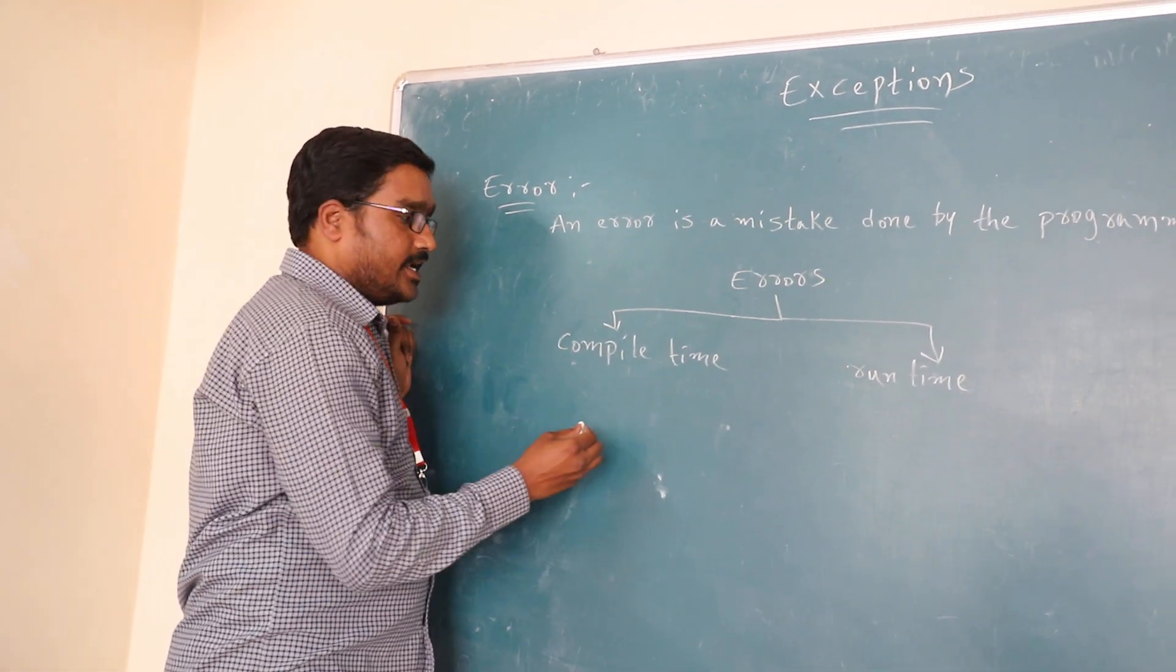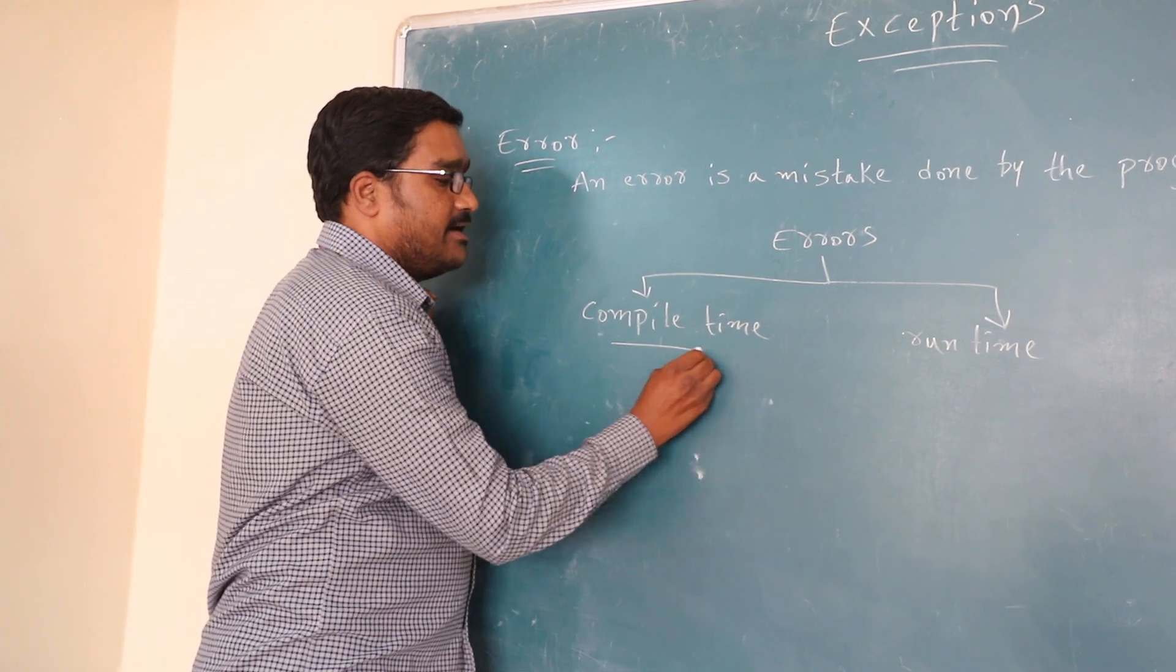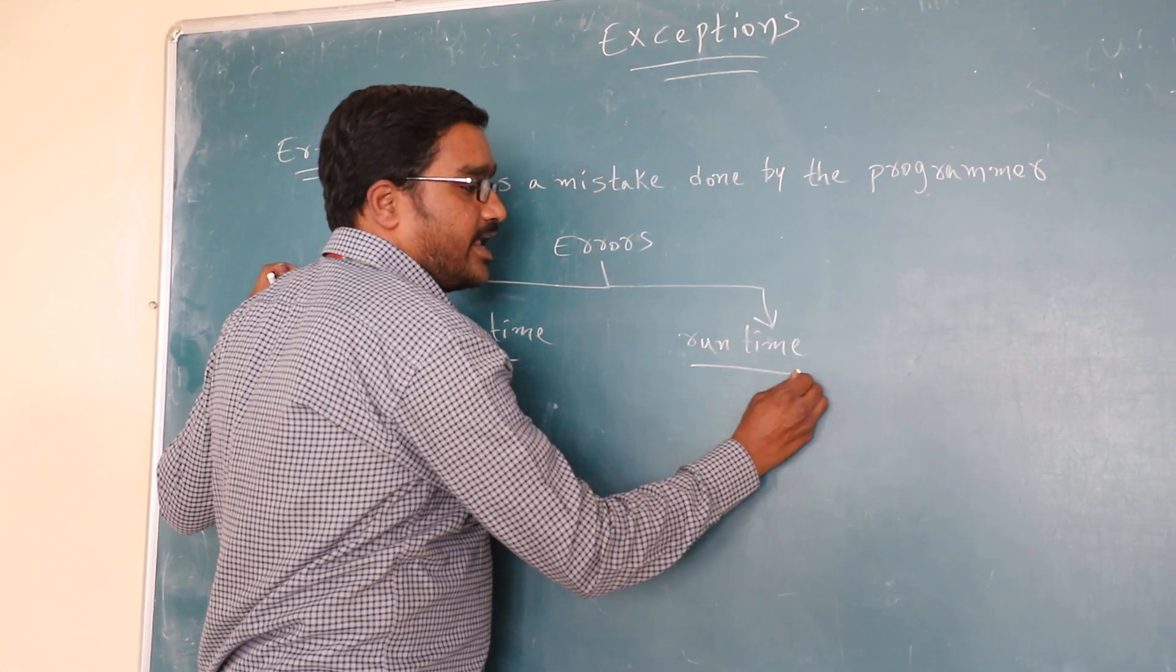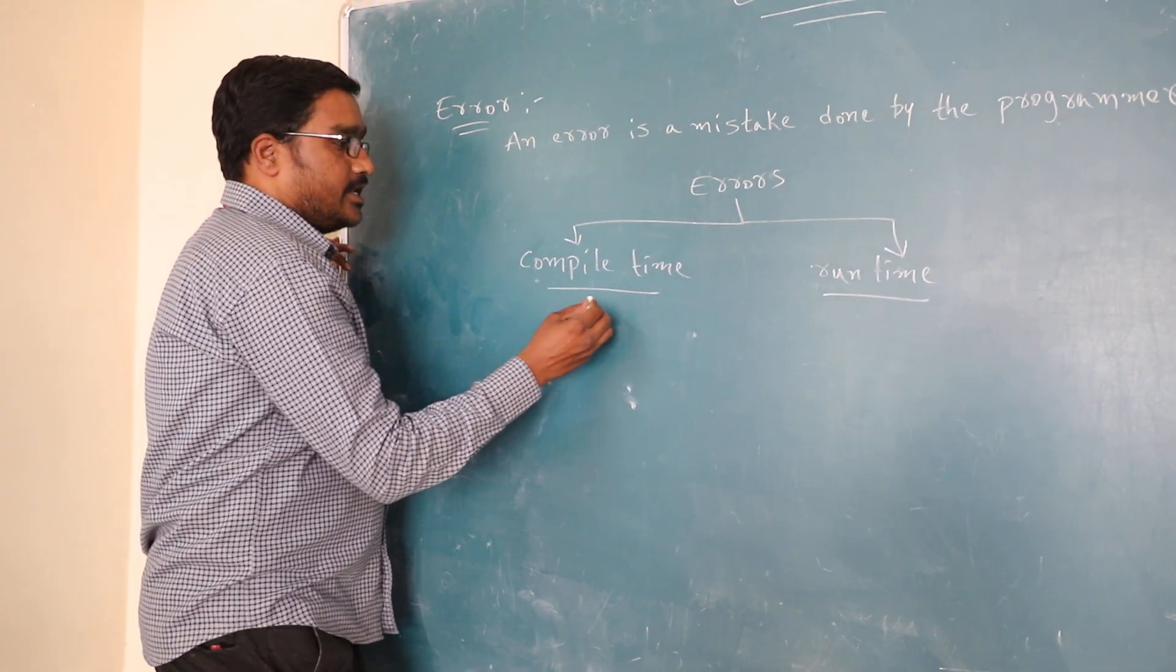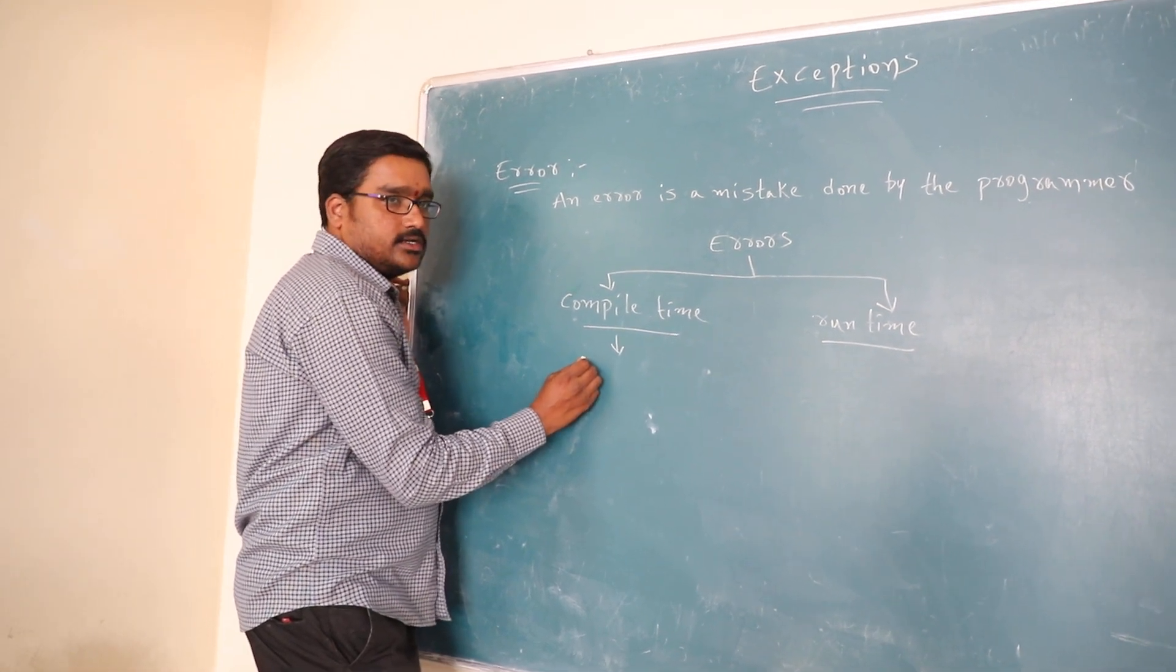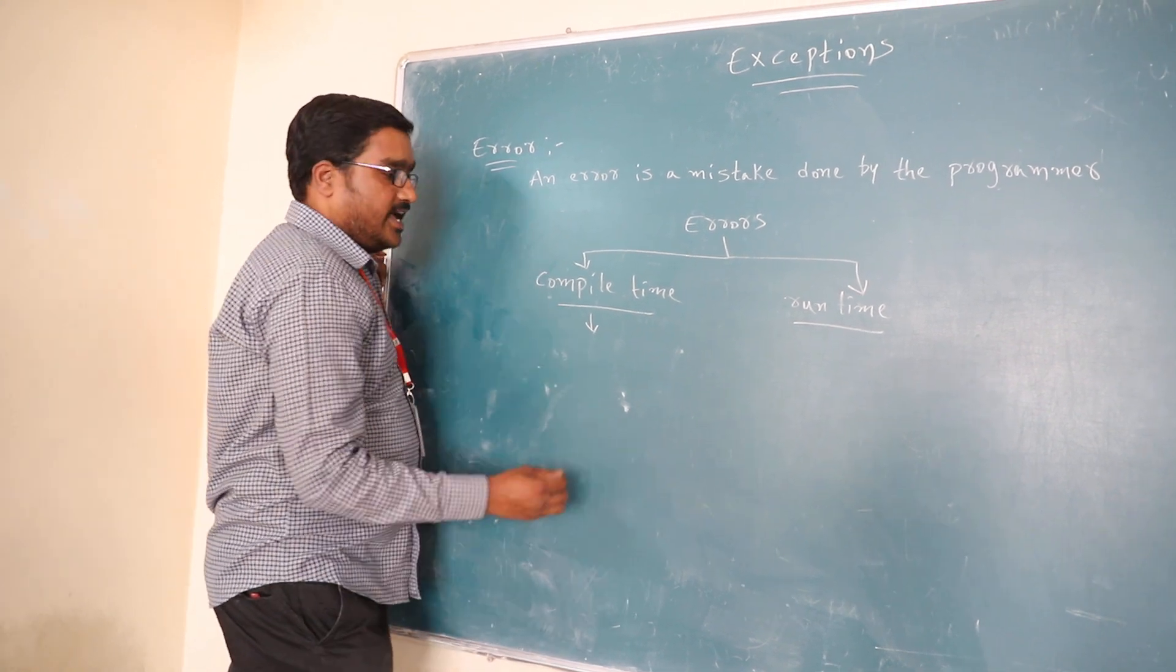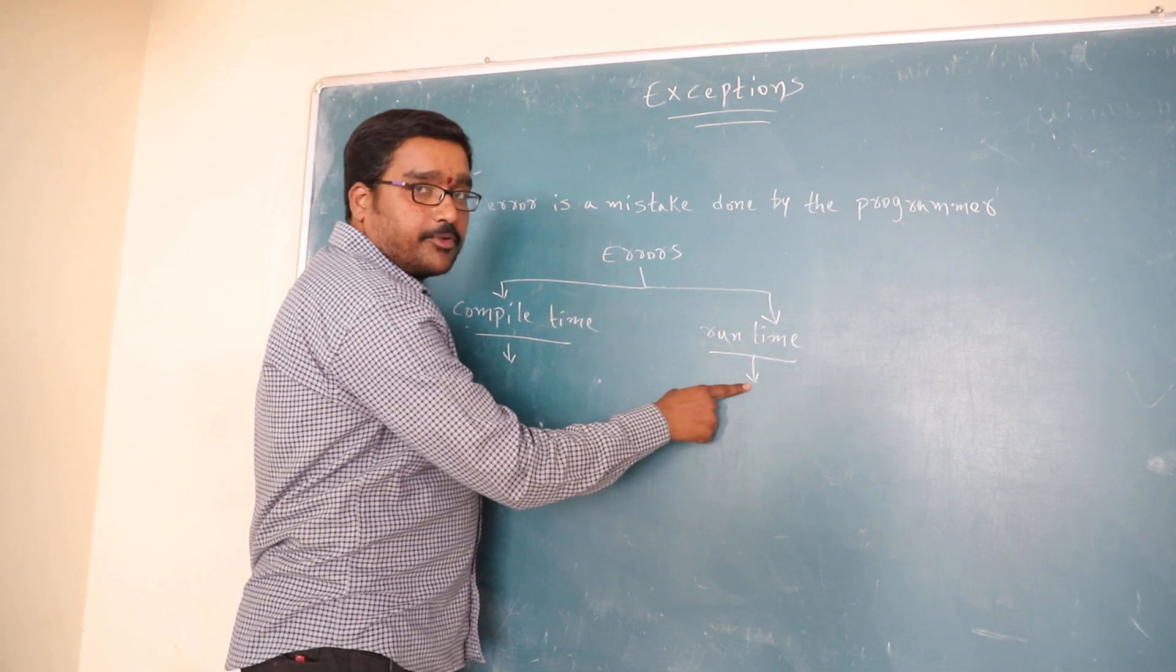The errors which occur at the time of compiling a program, those errors are called as compile time errors. The errors which occur at the time of running a program, those errors are called as run time errors. The compile time errors can be easily solved and identified by a developer. Whereas, run time errors will stop execution of a program.